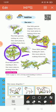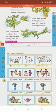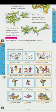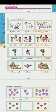4 little parrots wanting to dive, 1 more joins in making them 5. 4, 5. How many all together? 2 cows or 1 cow. 3 children and 2 children, 5.